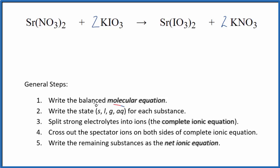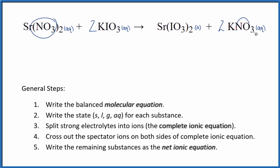Next we want to write the state for each substance, and that'll look like this. So nitrates, they're going to be soluble, and then compounds with potassium, they're soluble as well usually. Strontium iodate is slightly soluble, just a little bit of it dissolves, so we're going to call this a solid in our net ionic equation.